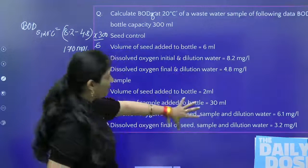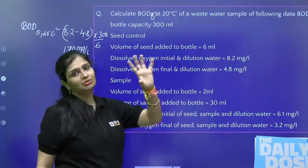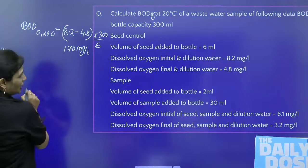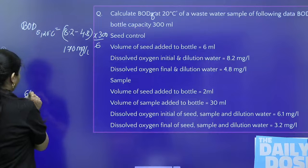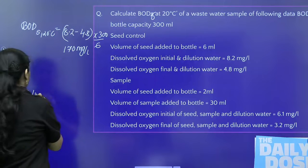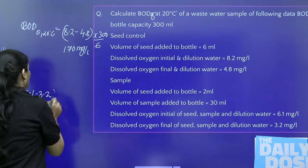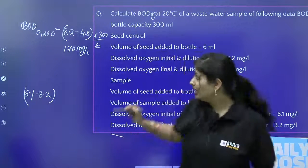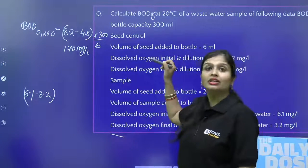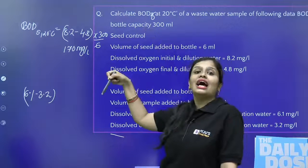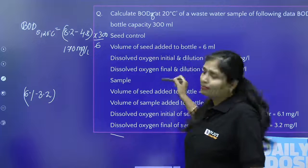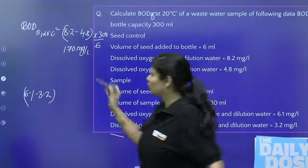Now for the test sample, DO initial is 6.1 mg per liter and DO final is 3.2 mg per liter. If I only use this answer, it would be wrong, because when you were adding microorganisms, the organic matter which was present in those microorganisms will also contribute. So you have to subtract this organic matter.